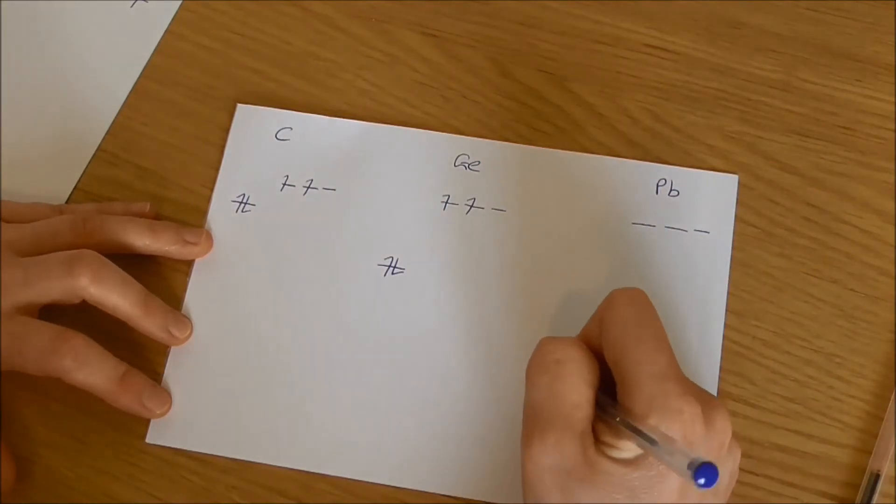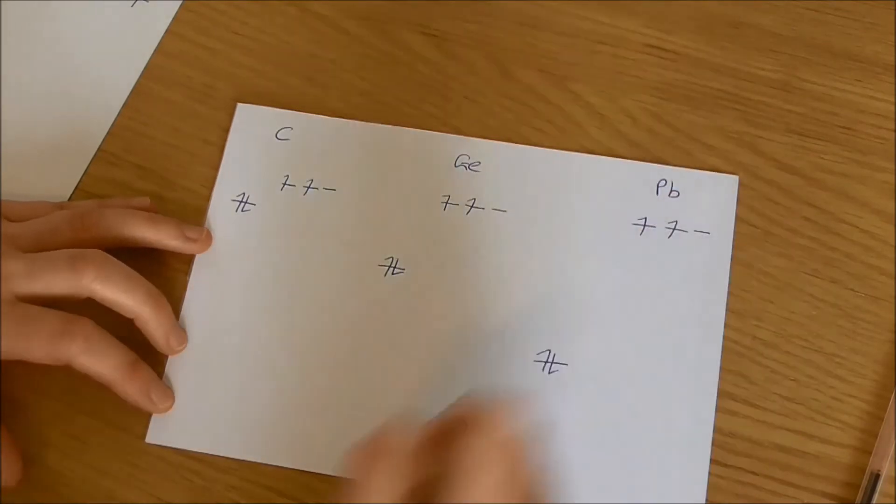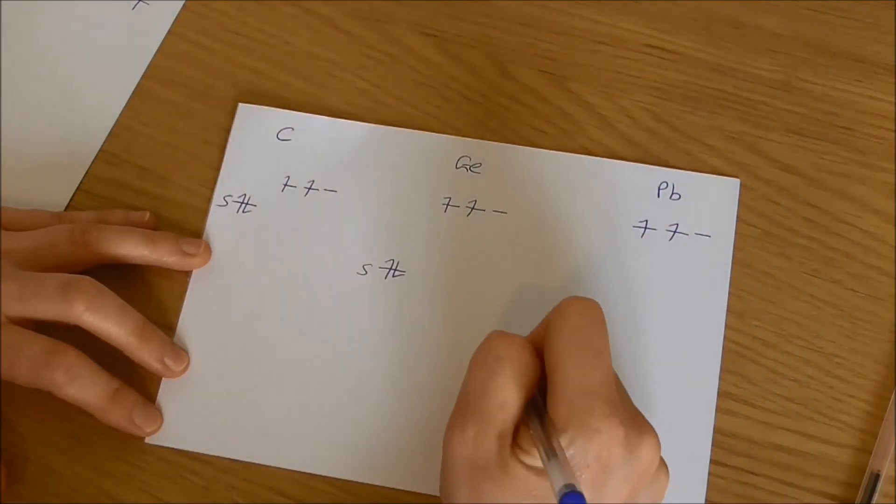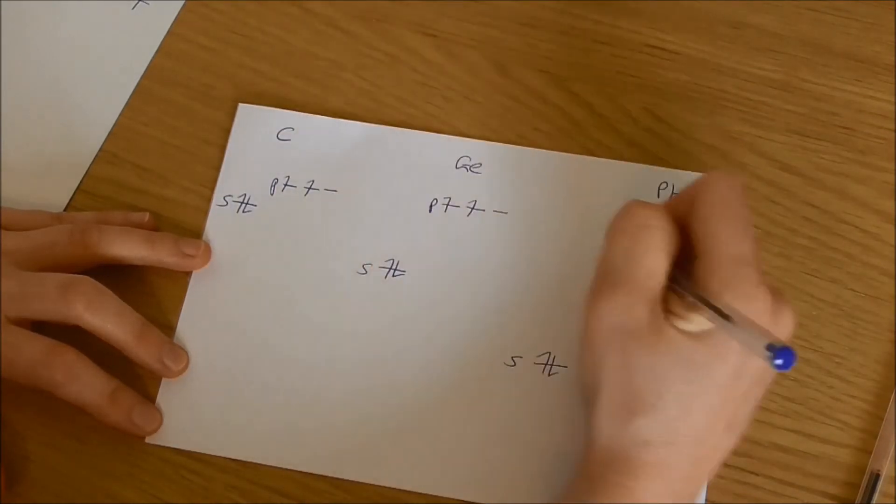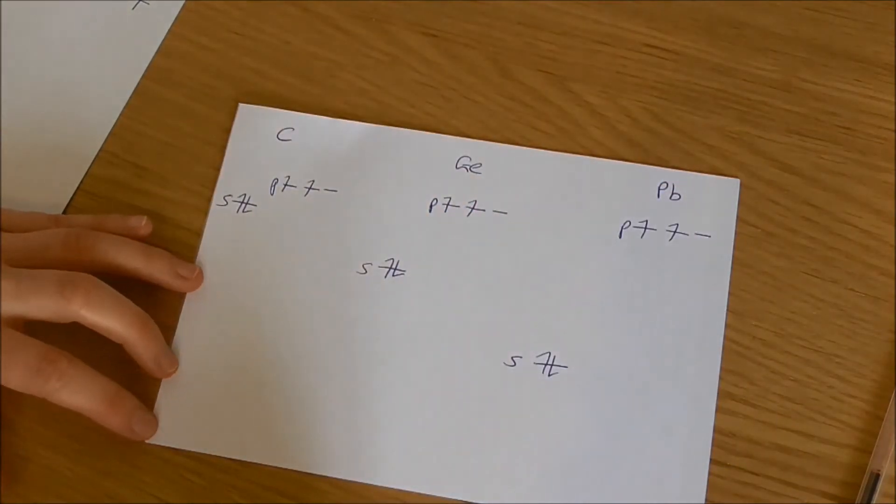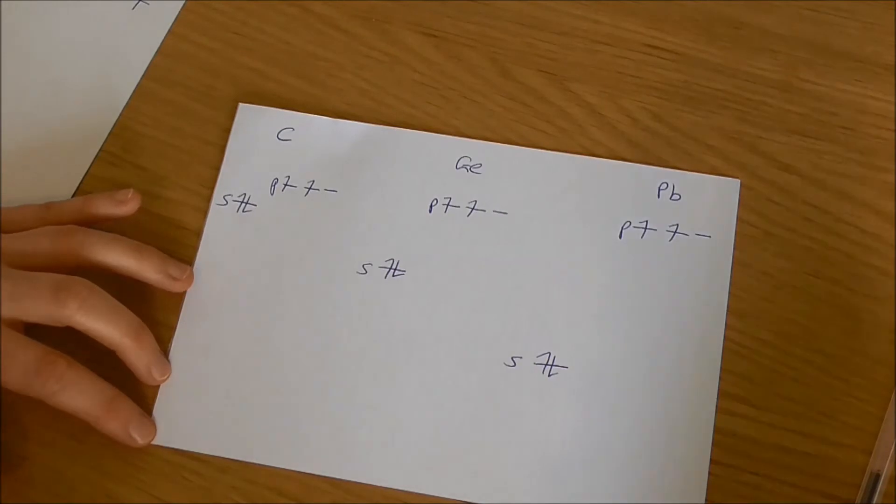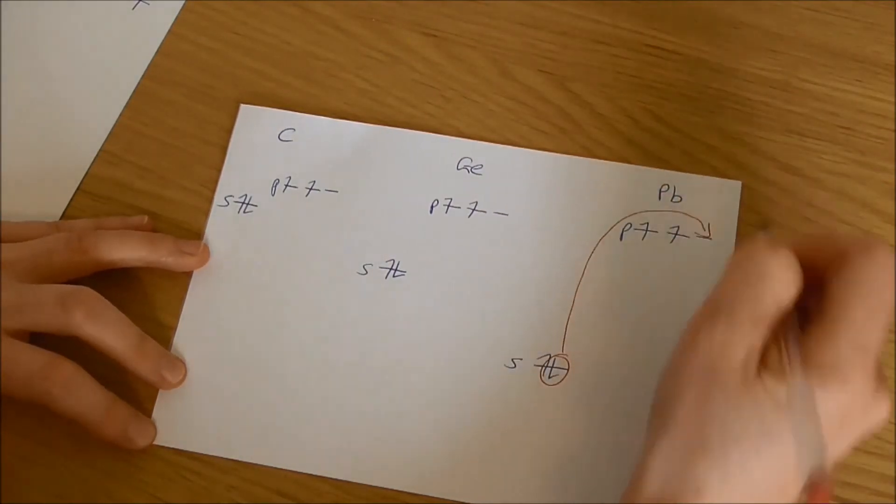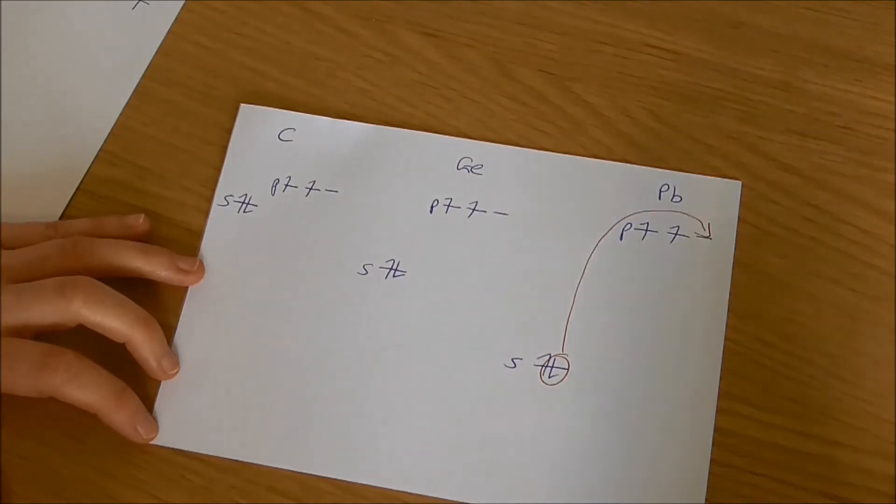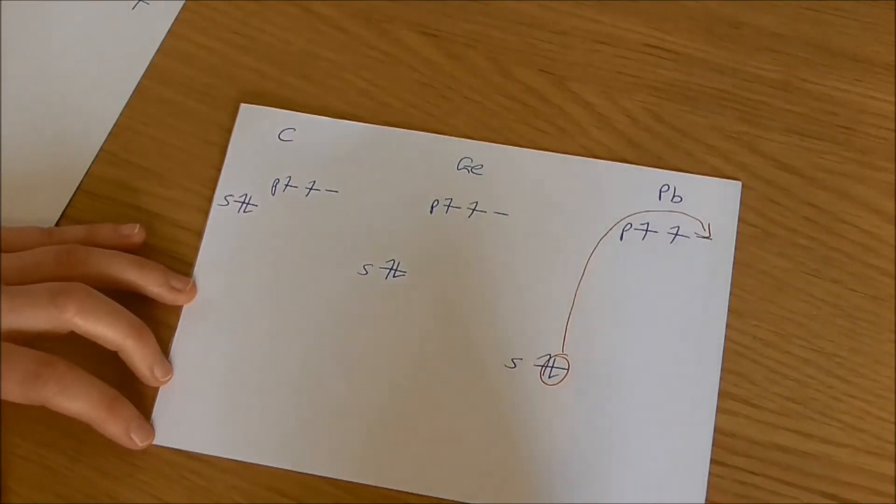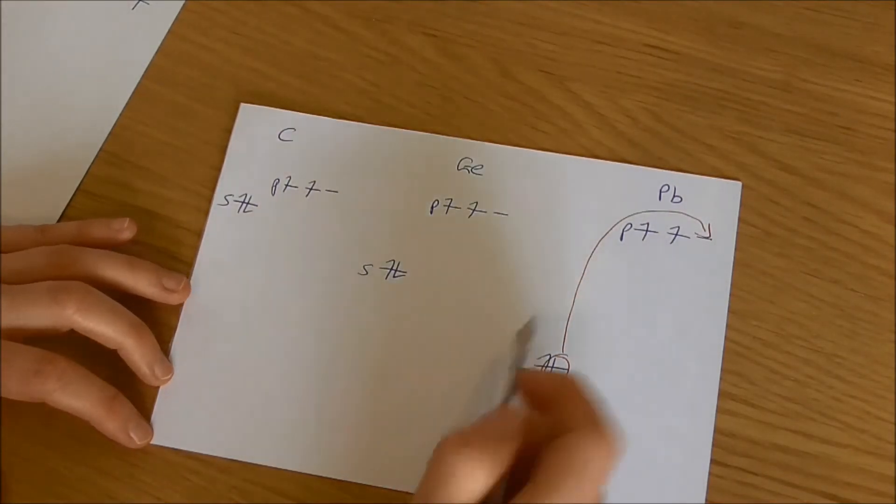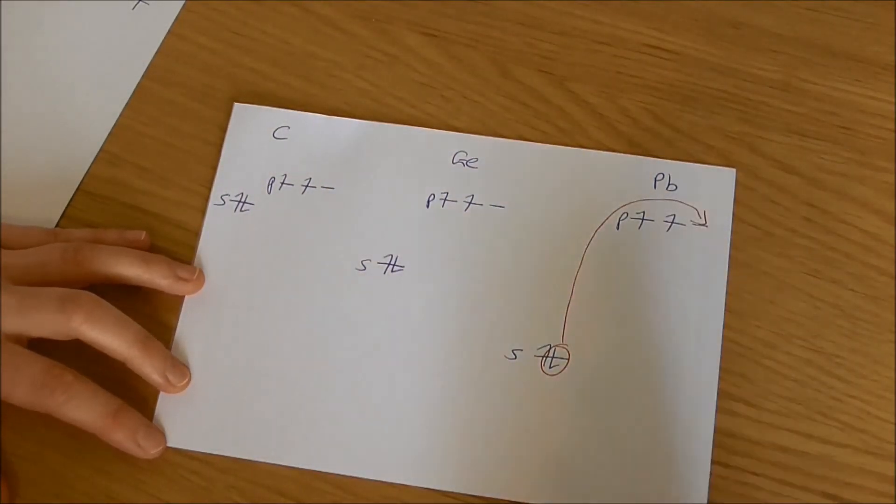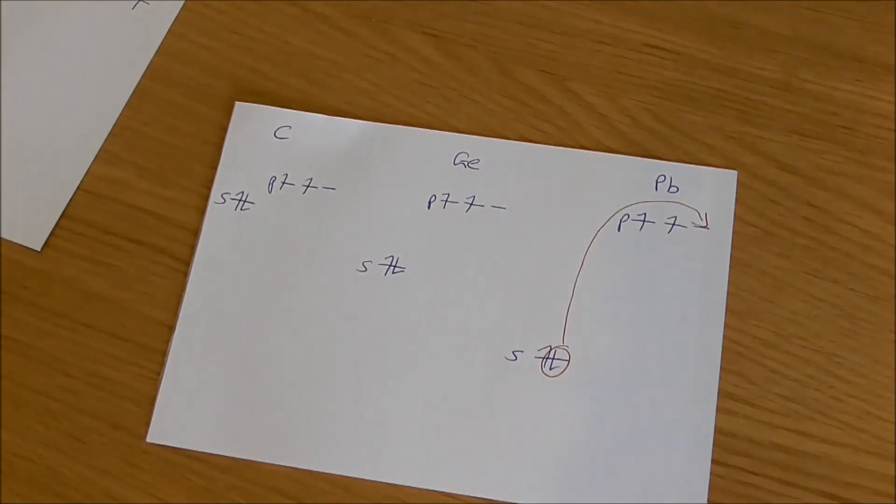As you get all the way down to the bottom of the group to lead, then you've got the biggest energy gap. The energy gap between the s orbitals and the p orbitals gets bigger as you go down the group in the p-block. The result of that is that promoting that s electron up and forming sp3 hybrid orbitals becomes more costly in energy. Lead is less likely to bother promoting that electron up to form those sp3 hybrid orbitals.